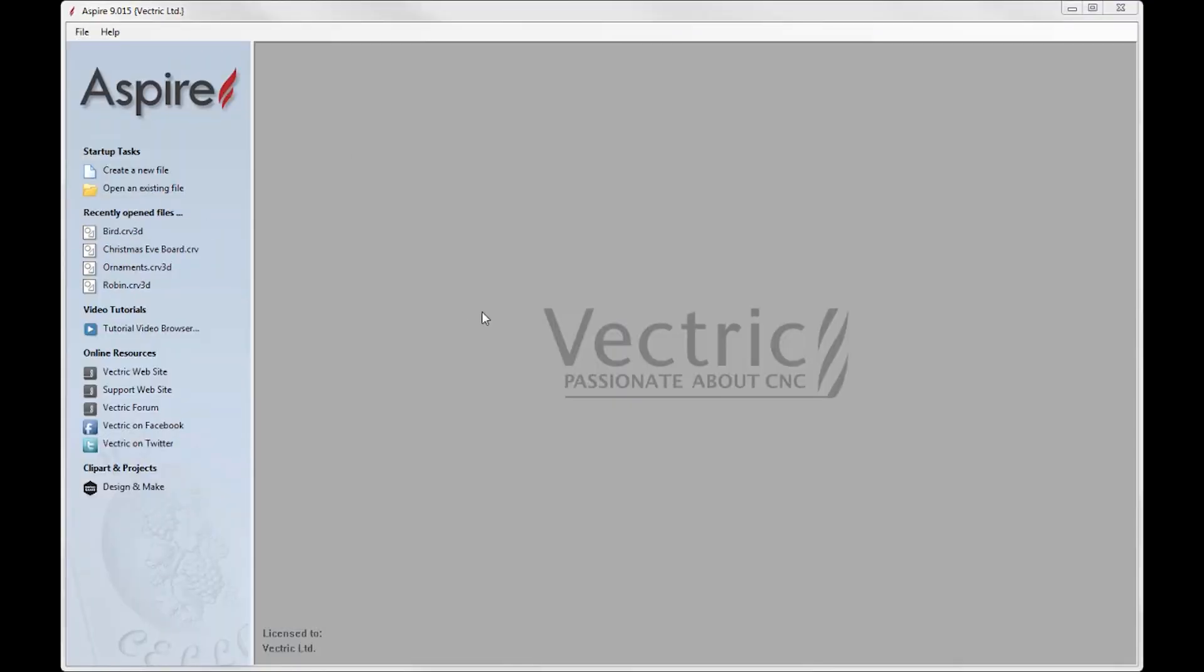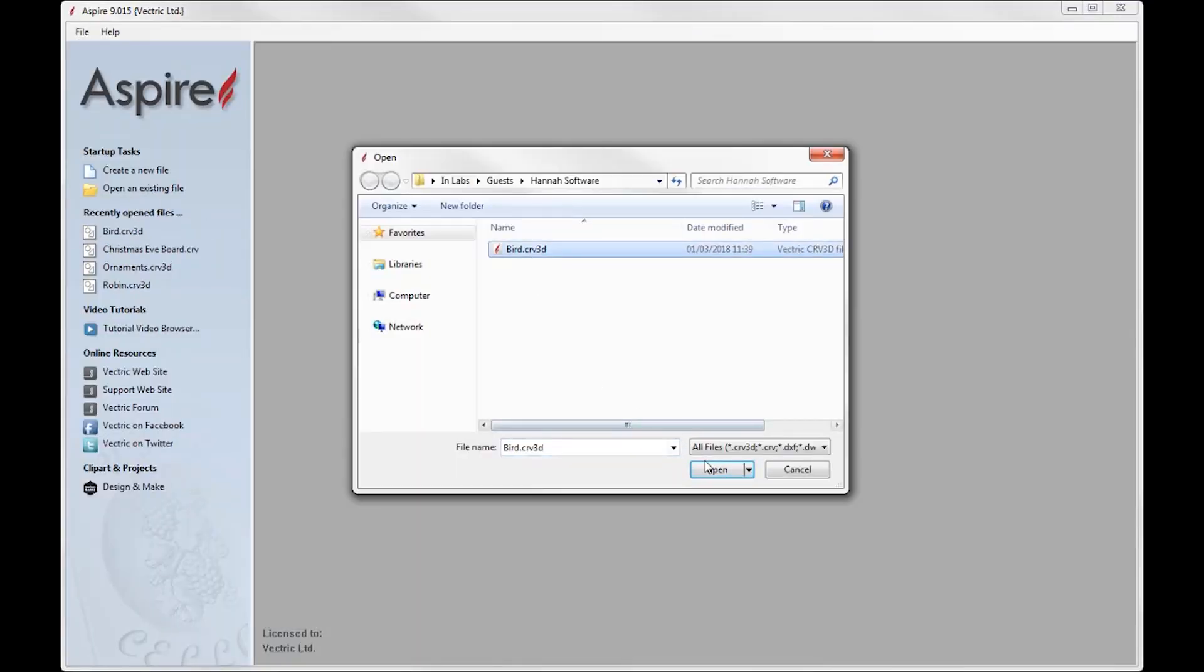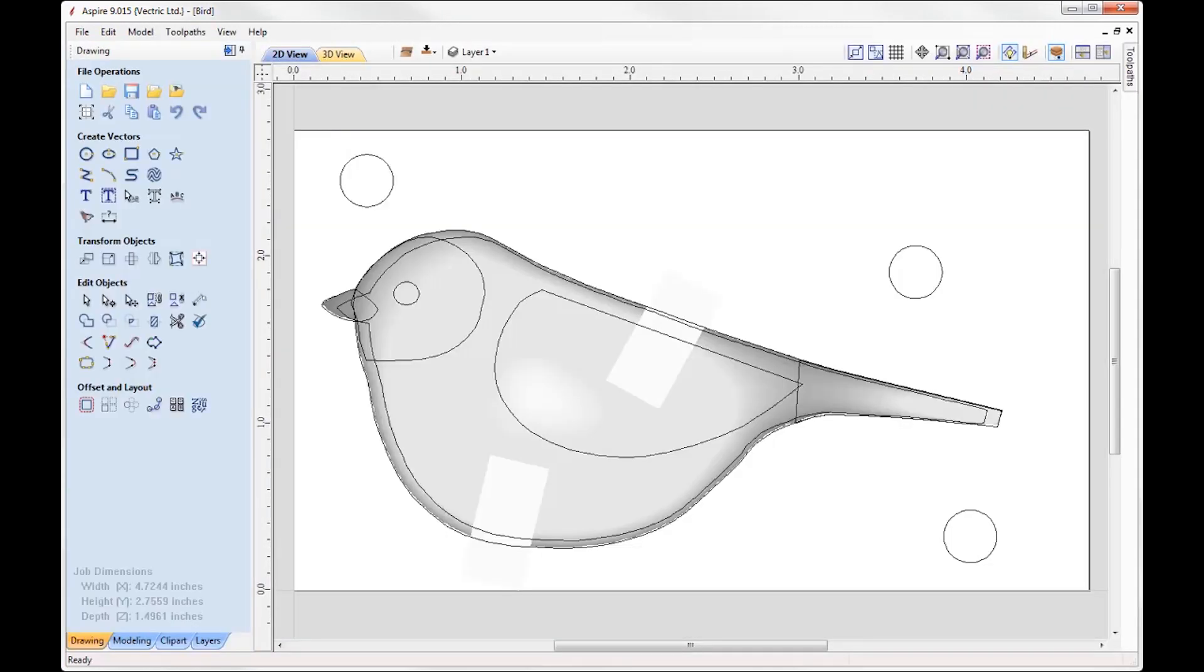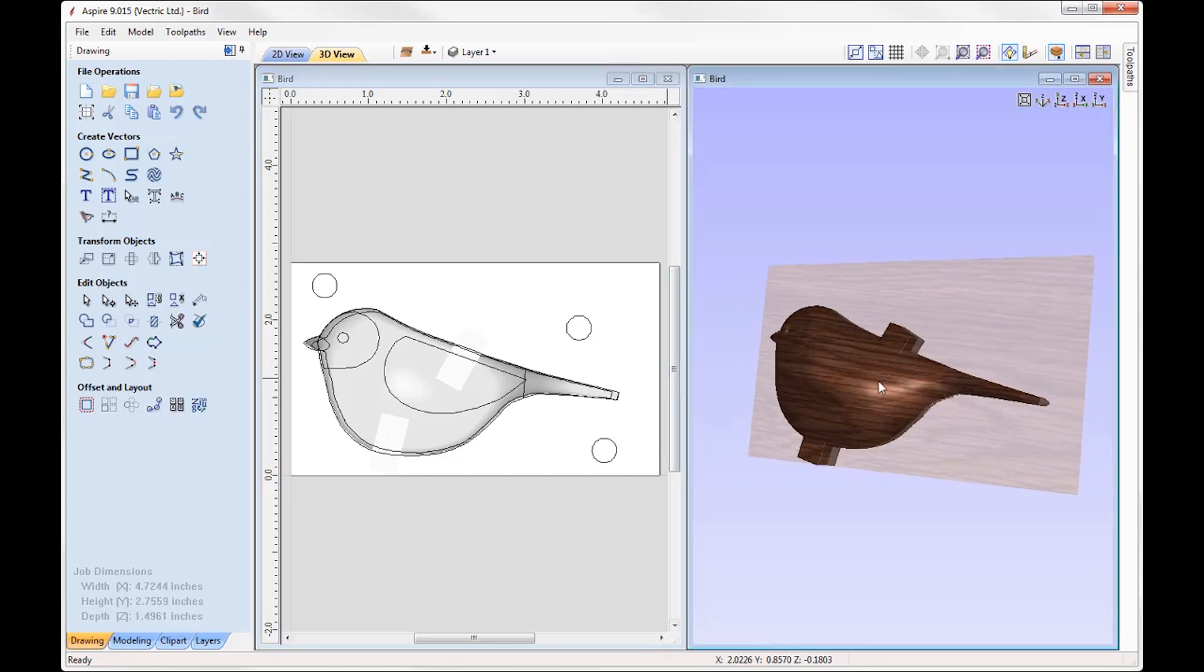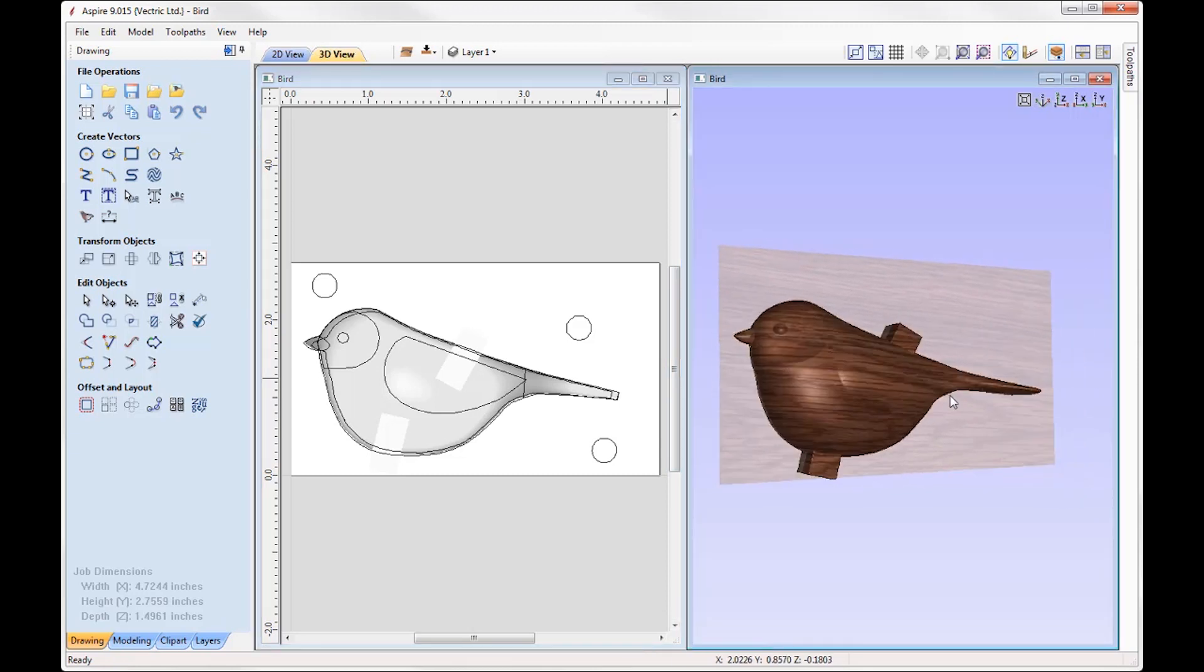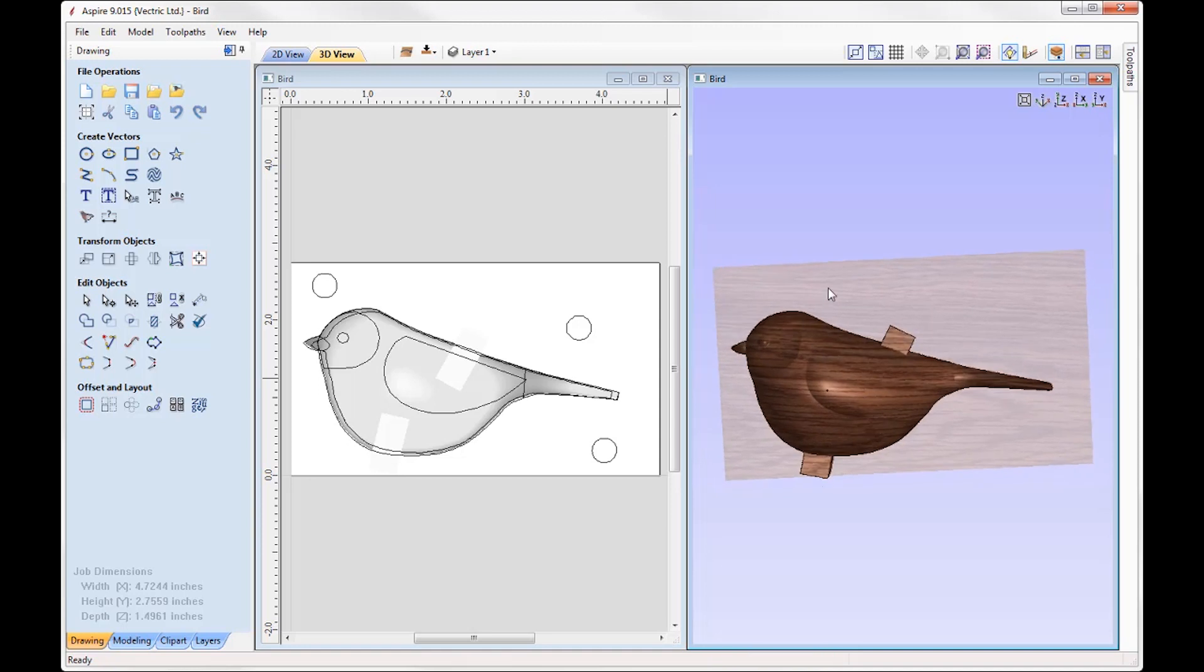Okay, so let's open up the bird file that Hannah's created. So here is a set of vectors. We've got grayscale components here in the 2D view. So let's tile our windows so we can take a look at that model. So this is the bird model that Hannah has modelled up herself.